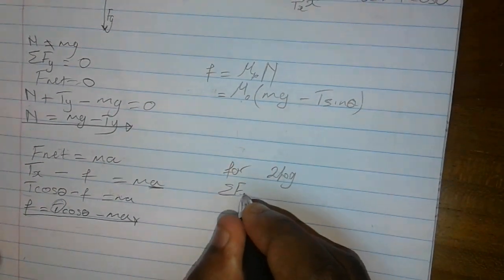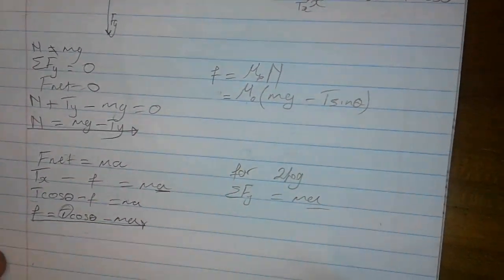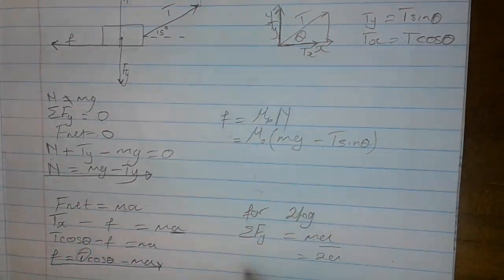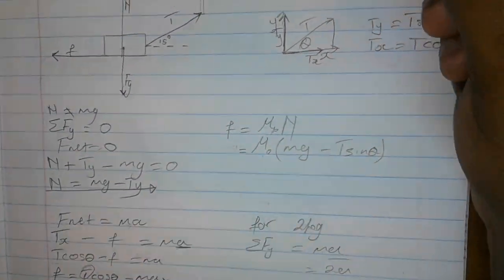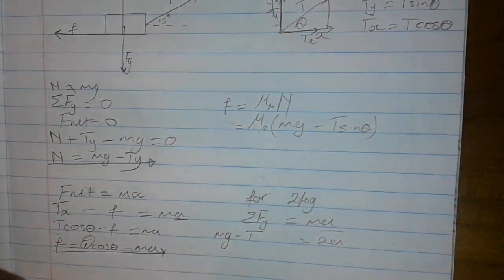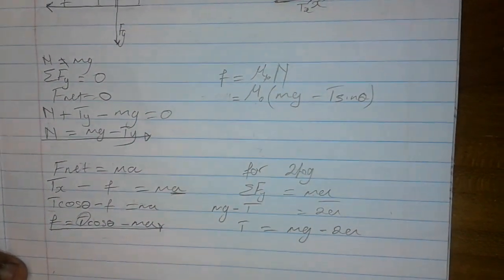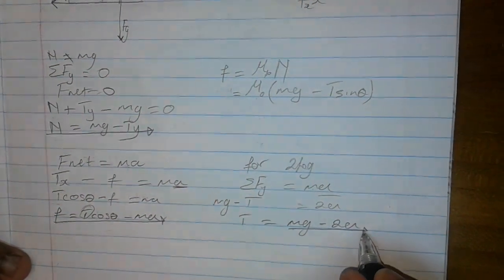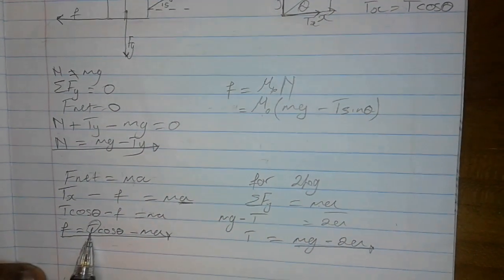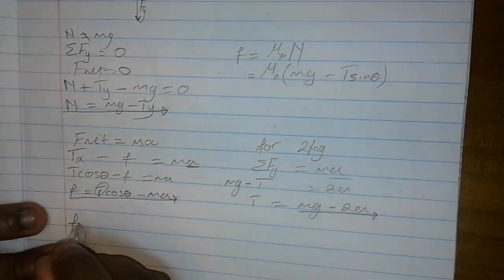For the 2 kg block, sum the forces in the y-direction: they equal ma, where m is 2 kg, so it's 2a. Taking downward as positive (direction of motion going down), we have weight minus tension equals 2a. Therefore, T equals mg minus 2a. That's the value of the tension. You go back, substitute T into the equation, plug in the values, and you get the frictional force.